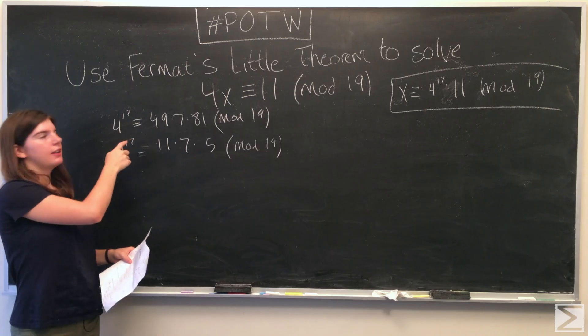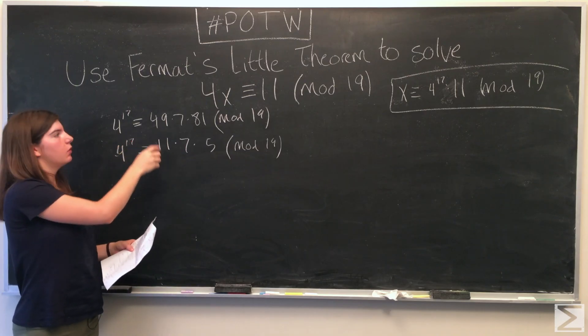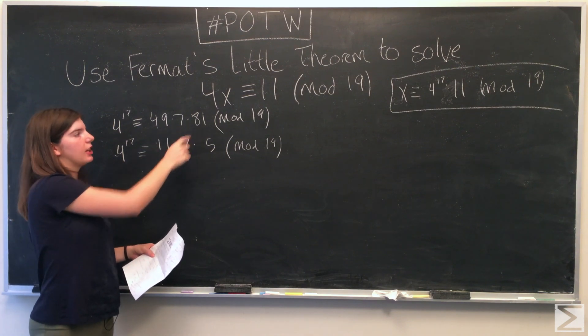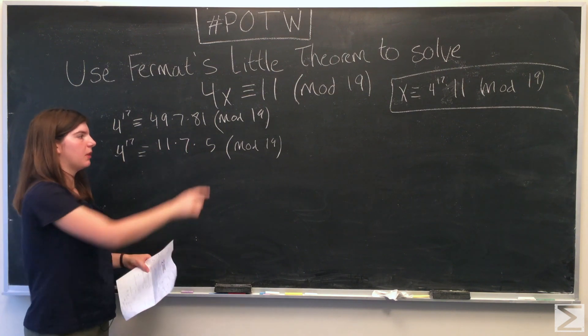When 49 is divided by 19, there's a remainder of 11, so we replace the 49 with an 11. 7 can stay the same. And then when 81 is divided by 19, there's a remainder of 5.